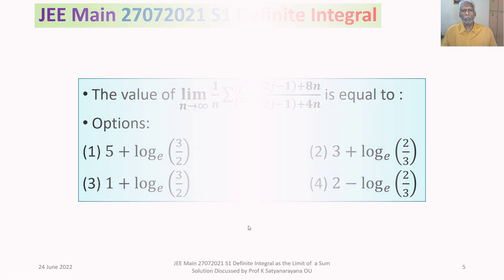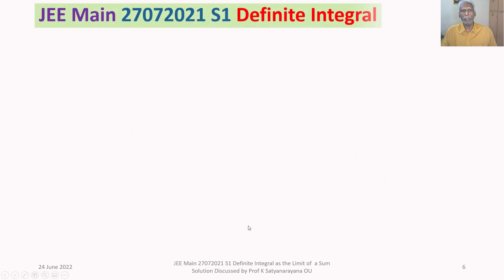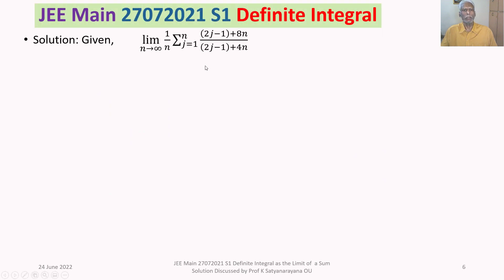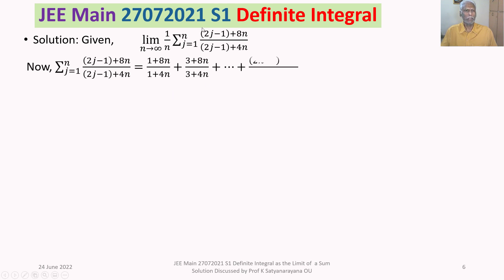We now discuss the solution in detail. We are given the limit n tends to infinity of (1/n) times sigma from j=1 to n of (2j − 1 + 8n) / (2j − 1 + 4n). Let us first expand this summation. When j=1, the term is (1 + 8n) / (1 + 4n). When j=2, it gives (3 + 8n) / (3 + 4n).